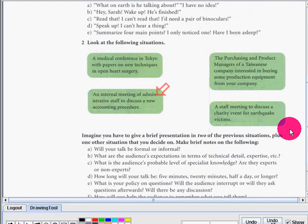Now look at the following situations. We have four: A medical conference in Tokyo with papers on new techniques in open heart surgery. Next, an internal meeting of administrative staff to discuss a new accounting procedure. Next, the purchasing and product managers of a Taiwanese company interested in buying some production equipment from your company.